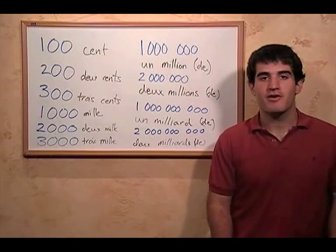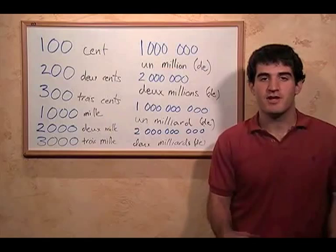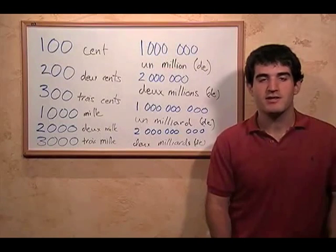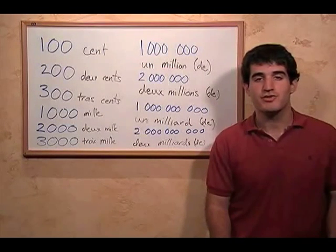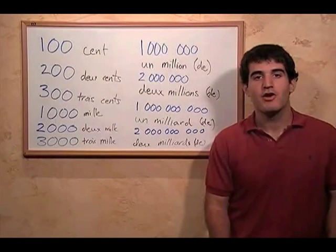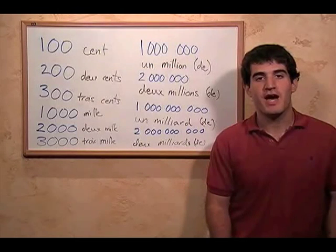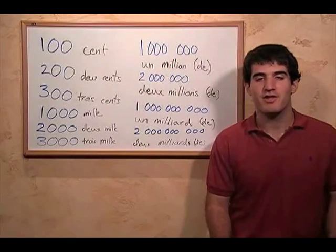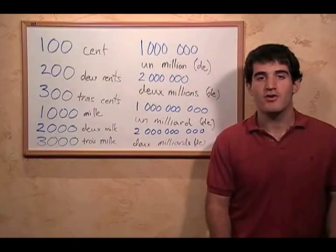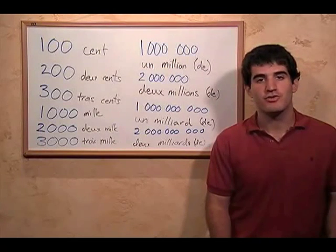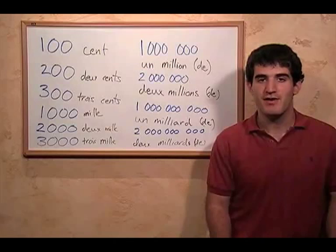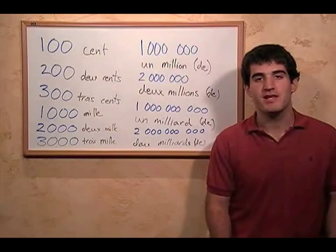If we're talking about the number of an object, like dollars, for cent and mille, we just put the object we're talking about after the number. So a hundred dollars is cent dollars, and two thousand dollars is deux mille dollars.